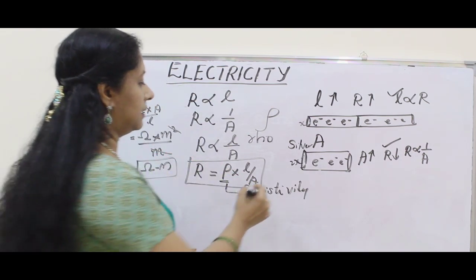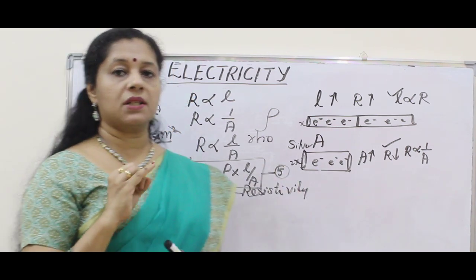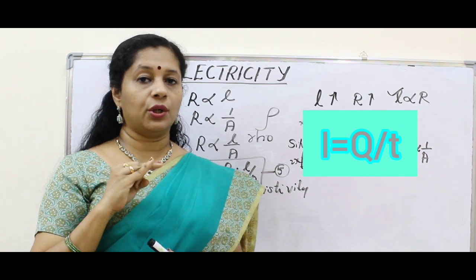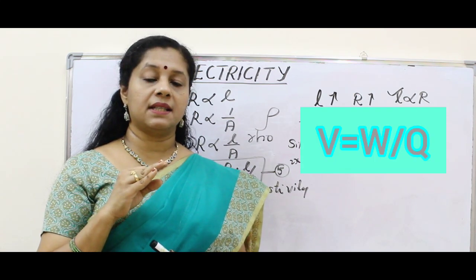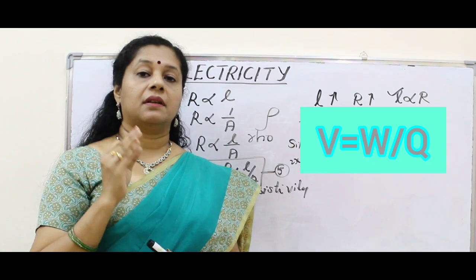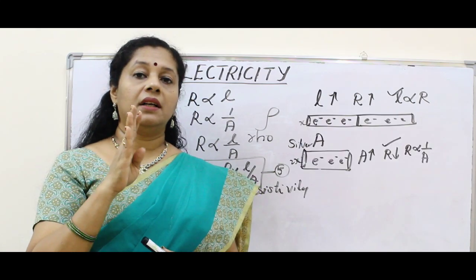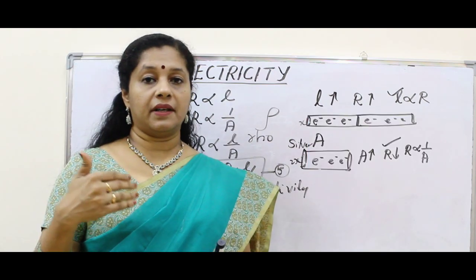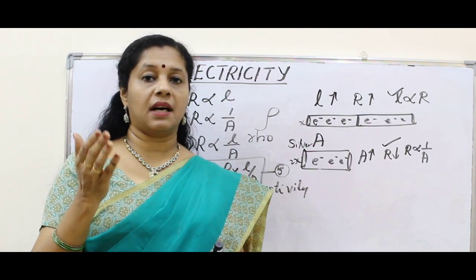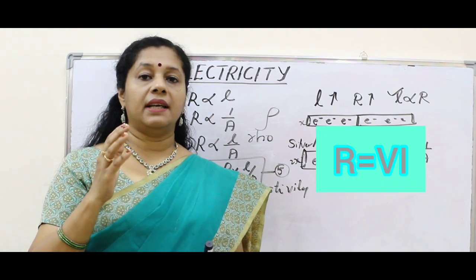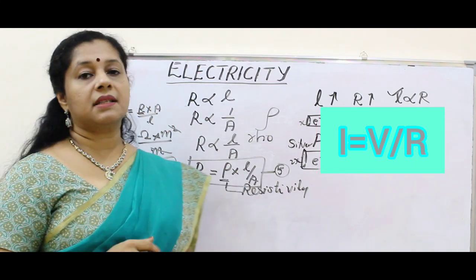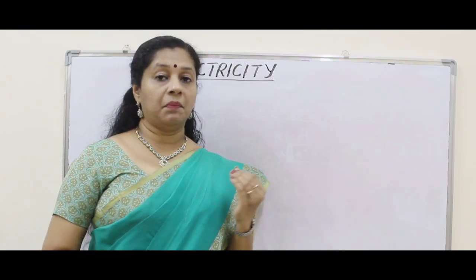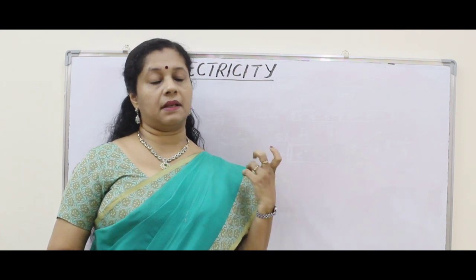This is the fifth equation for us. The first equation was Q = Ne. Then I = Q/T. Then potential difference V = W/Q. Then Ohm's law: V/I = R, which gives R = V/I or I = V/R. And the latest equation is R = ρL/A.